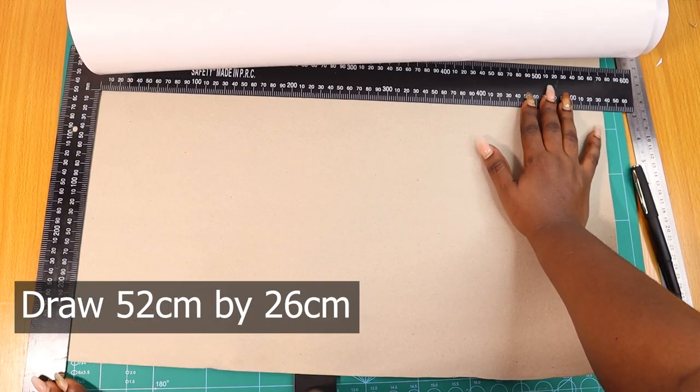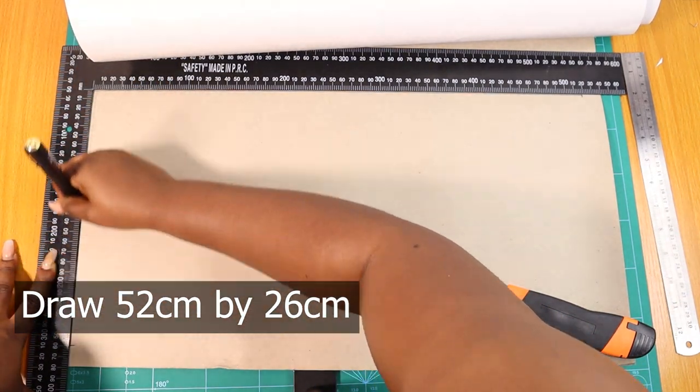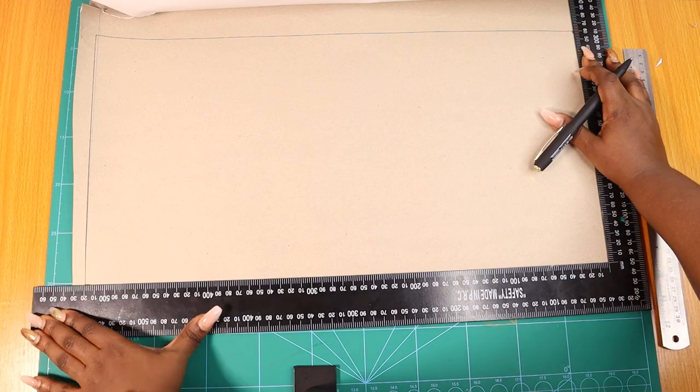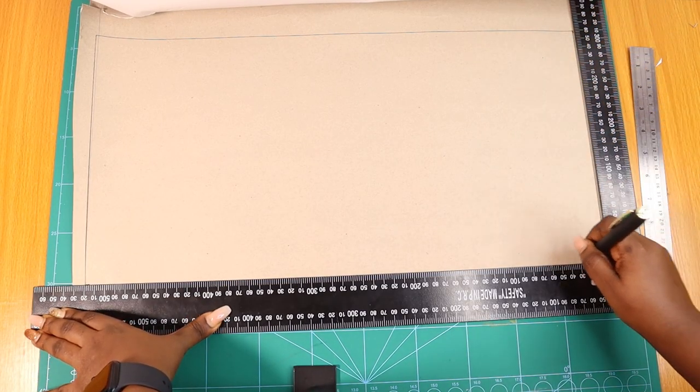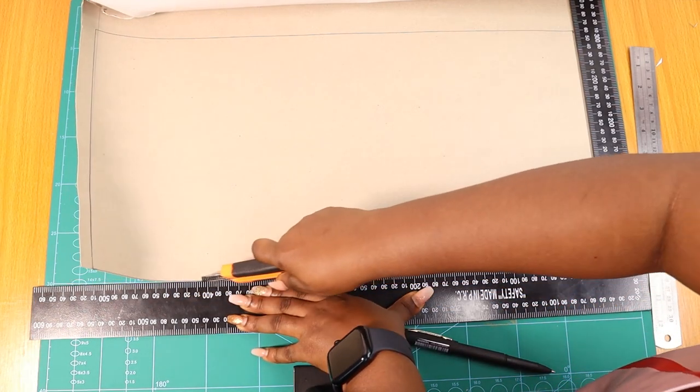To start with our piece, first I'm going to draw out 52 centimeters by 26 centimeters. This is the entire length and width of our purse when it's unfolded. This is where we are now going to sort of carve out all the contours and corners that we have to trim off.